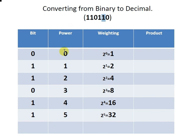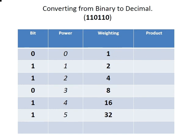Now we're going to apply powers of 2. We start with power 0 in the first position, then 1, 2, 3, 4, and 5. So 2 to the power of 0 is 1, 2 to the power of 1 is 2, and so on — these are the weightings. In the next column we multiply each bit by its weighting: 0×1=0, 1×2=2, 1×4=4, 0×8=0, 1×16=16, and 1×32=32.